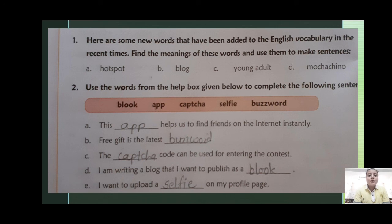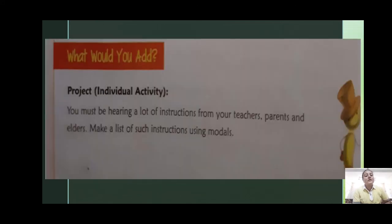Next: use the words from the help box given below to complete the following sentences. Options are: look, app, capital, selfie, and project. For example: 'I am writing a blog that I want to publish as a dash on my profile page' — answer: selfie. And the last one is: project.